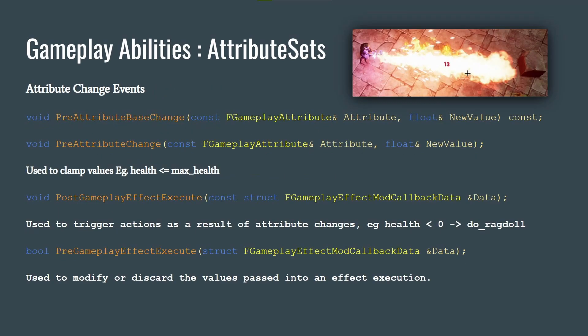There are events called whenever an attribute changes: PreAttributeChange, the base change, PostGameplayEffectExecute — called after a gameplay effect is executed on you — and PreGameplayEffectExecute, called right before the effect executes. You can inject different code into these events based on different gameplay effects. For example, if I take damage and want the player's UI to update, I can check inside PostGameplayEffectExecute whether my health attribute changed and respond accordingly.